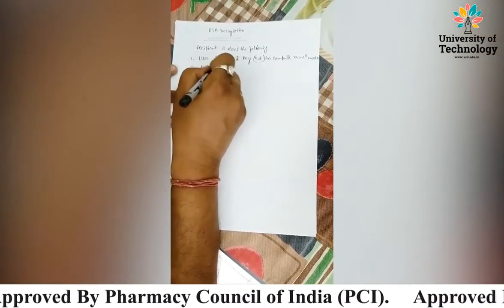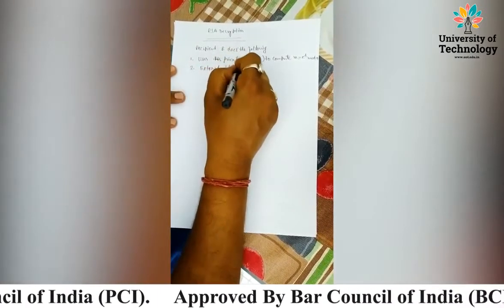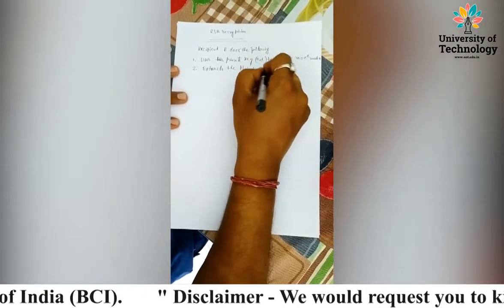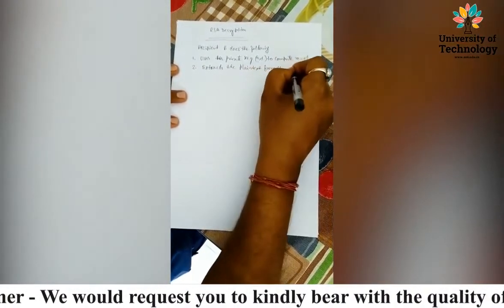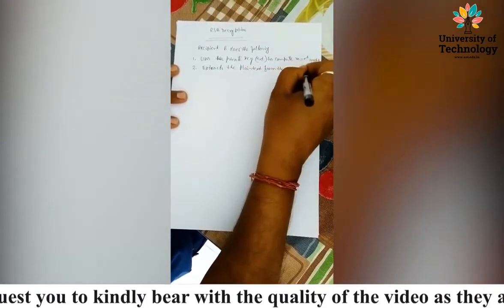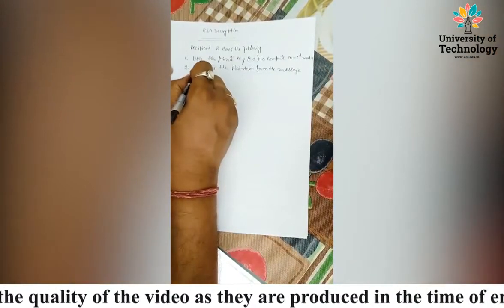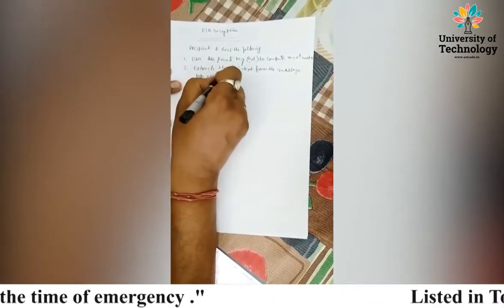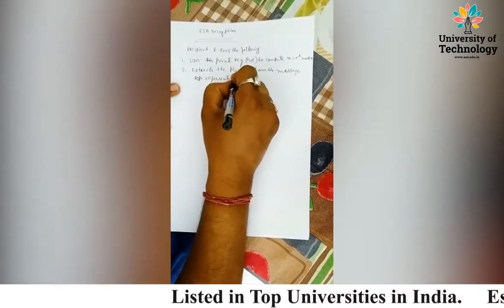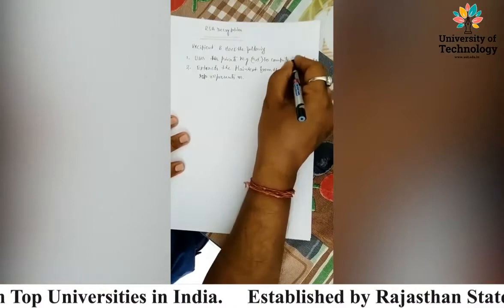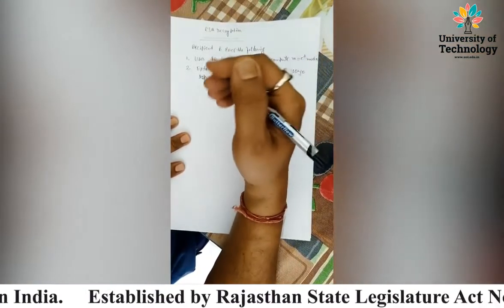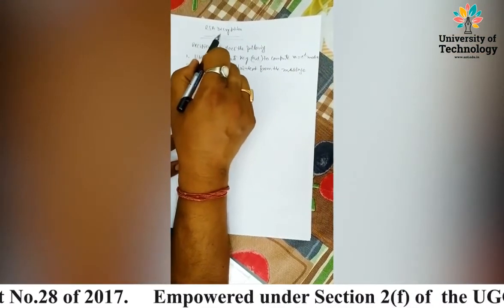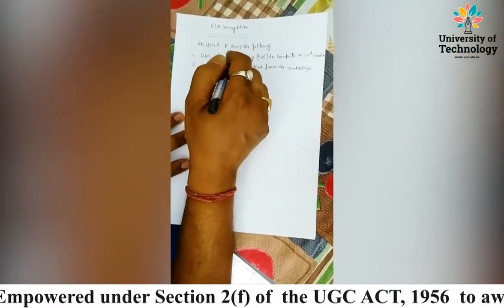The second step of RSA decryption is: B extracts the plain text from the message. Whatever value of M we obtained, we represent that value as plain text. This is the RSA decryption process — I think you have understood about the decryption of the RSA process.